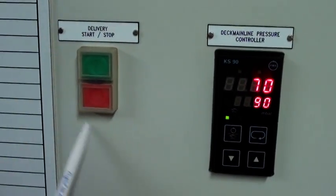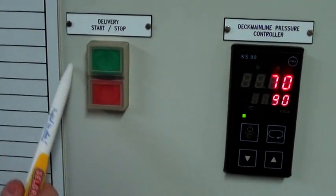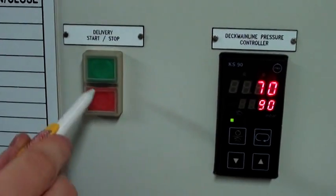To supply the inert gas on deck you have to push the green button to start the delivery. If you want to stop the delivery of inert gas on deck, you have to push the red button.